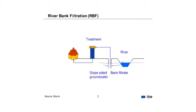For artificial groundwater recharge, you will use, for example, surface water. You can have some pretreatment, and then you will infiltrate this water at an infiltration site. Again, you can have some admixture of natural groundwater, and afterwards treatment if necessary — and of course you can then use the water to supply a city.